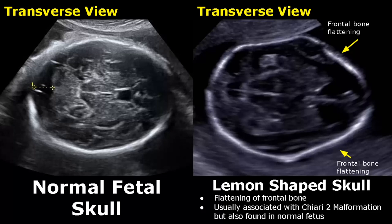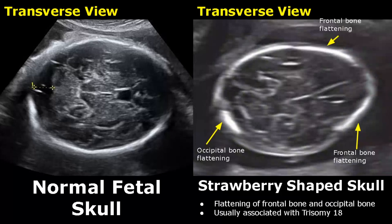In a strawberry-shaped skull there is flattening of both the frontal bone and the occipital bone. It is usually associated with Trisomy 18.